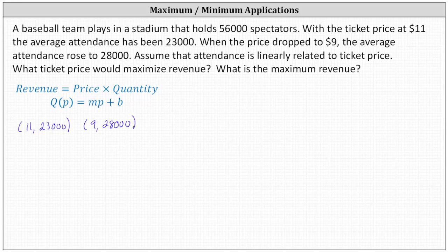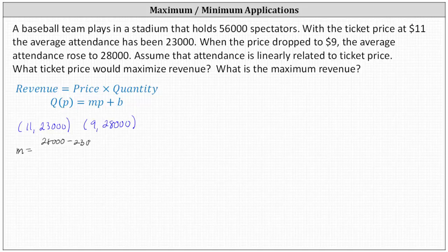Now we need to determine our quantity function Q of P. Because we know it's linear, we can find the slope, where the slope M is equal to the change in attendance divided by the change in price. The change in attendance is 28,000 minus 23,000, divided by the change in price, which is 9 minus 11. Simplifying, we have 5,000 divided by negative two, which is negative 2,500.